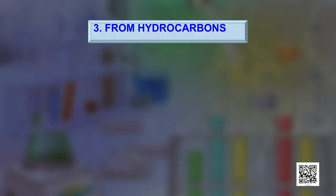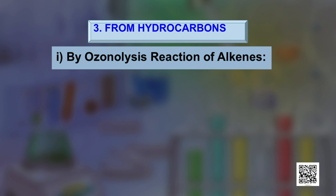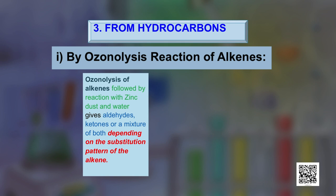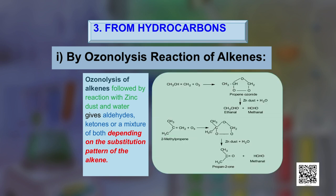The second method is dehydrogenation of alcohols, which is suitable for volatile alcohols and has industrial application. The vapors of alcohol are passed over heavy metal catalysts such as silver or copper. Dehydrogenation takes place: primary alcohols give aldehydes while secondary alcohols give ketones. From hydrocarbons also we can get aldehydes — the first method being ozonolysis of alkenes. Ozonolysis of alkenes followed by treatment with zinc dust and water gives aldehydes, ketones, or a mixture of both, depending on the substitution pattern of the alkene.